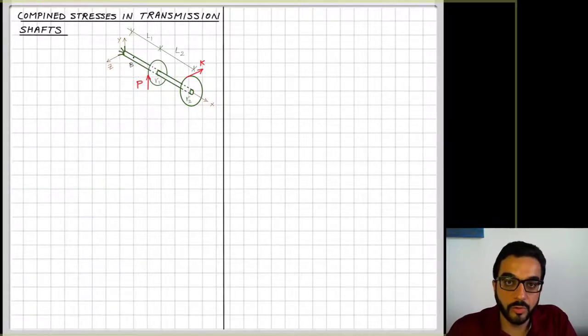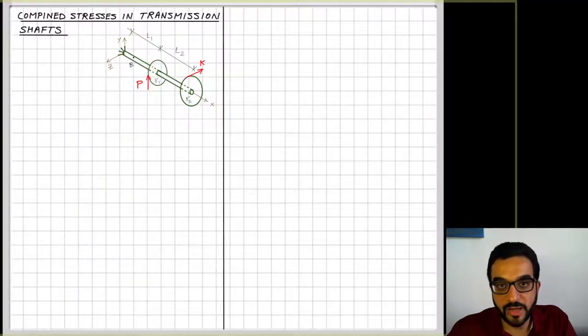So with that, we'll go back to transmission shafts and now really think about what's the maximum set of stresses developing in shafts, knowing now that combined loads result in combined stresses that together will result in maximum transformed stresses at some orientation.